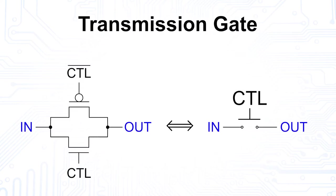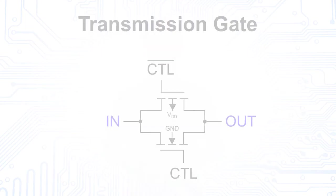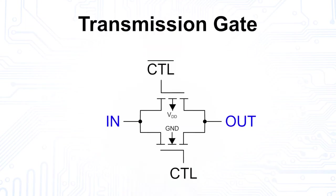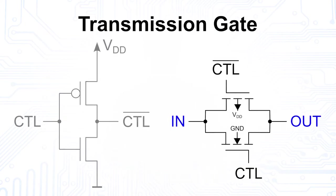These circuits are used as a kind of circuit breaker and can conduct or block in both directions, depending on a control signal. The transmission gate is composed of an NMOS and a PMOS transistor connected like this. Strictly speaking, the circuit needs an additional inverter, which, as we already know, consists of two additional MOSFETs.